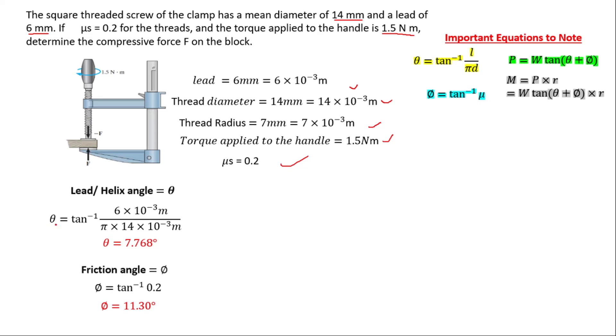Now we have the helix angle because you need to find this because it will assist you when finding the compressive force. Now with the compressive force, we know that we have the torque applied at the handle, which is 1.5 Newton meters and we have the radius of the thread. So we can find the effort, which will give you 1.5 Newton meters equals P times the radius. And that will give you P to be equal to 214.285 Newtons.